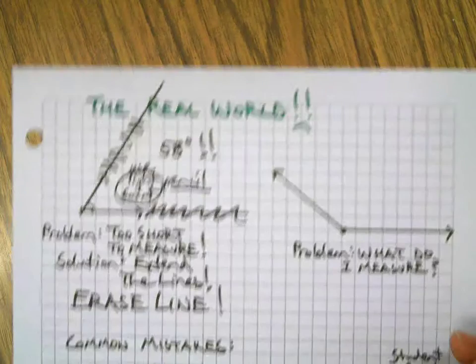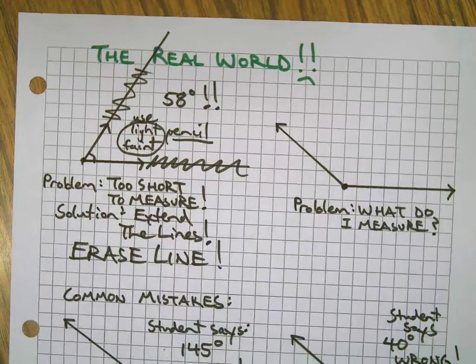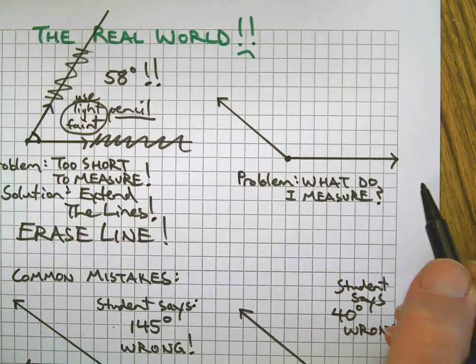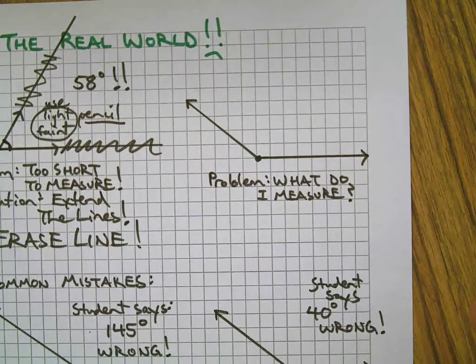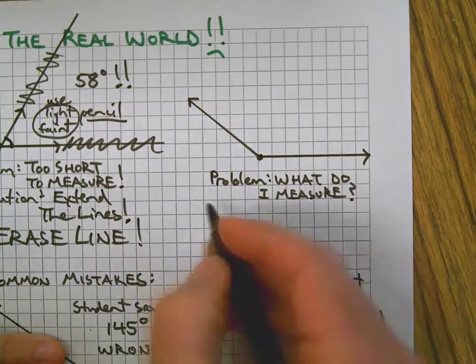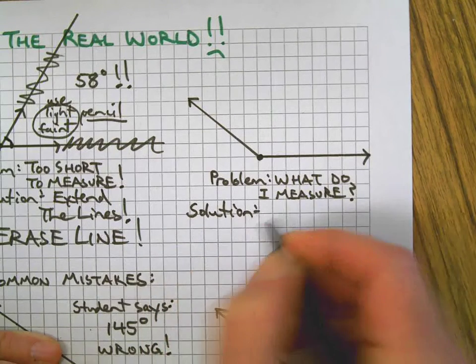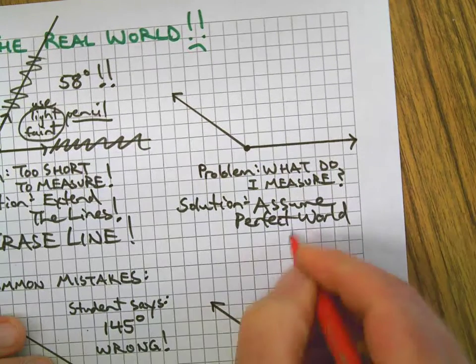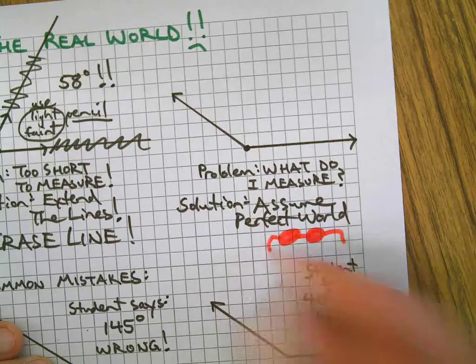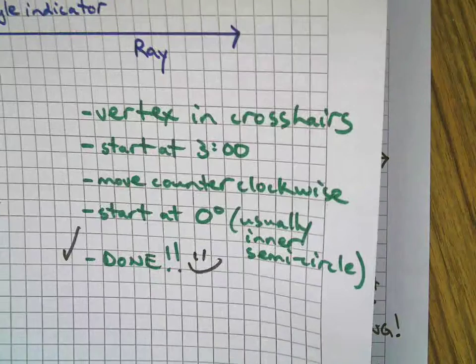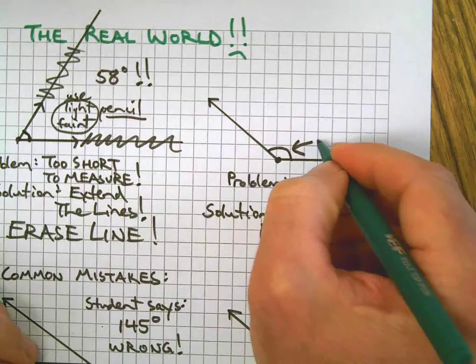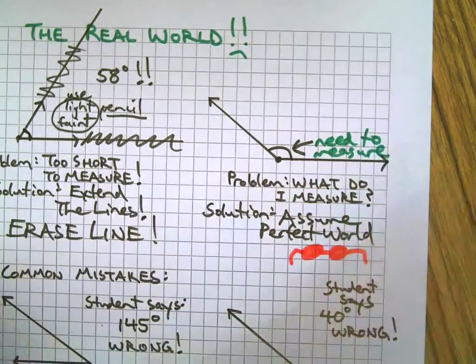This one here doesn't have the little thingy telling you what to measure. At least the other one was tiny but it had the indicator there. This one doesn't tell you what to measure, so you can have a lot of different answers. What you need to do is assume that it's a perfect world - look at it through rose-colored glasses. Go back to our perfect world. We got the vertex, we're going to start at three o'clock, we're going to move counterclockwise. Assume that there's supposed to be an indicator there.